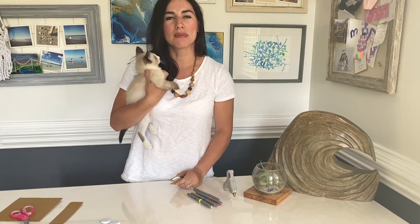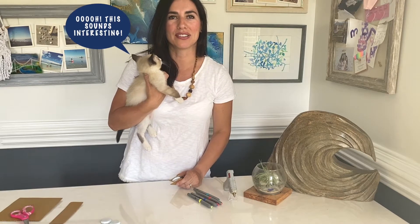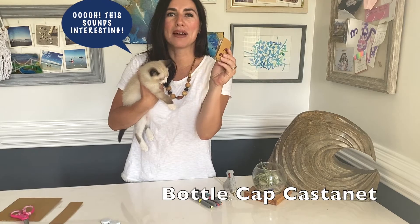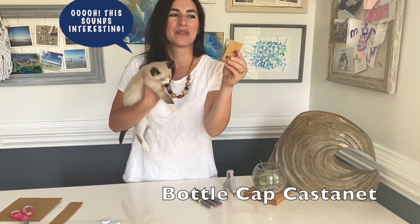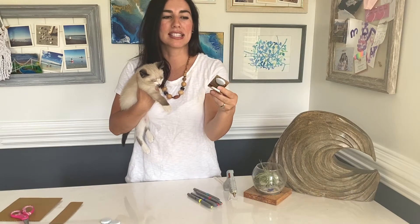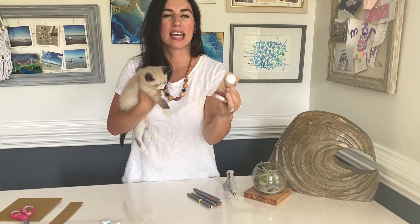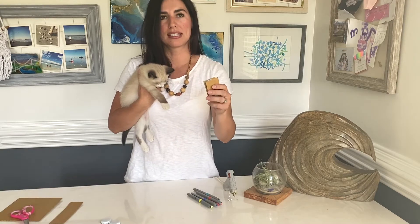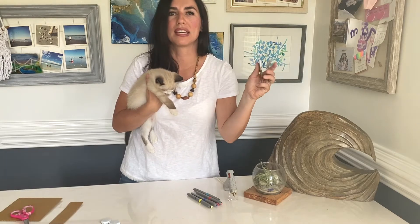Today we are making a fun musical instrument with items you hopefully have around your house. We are going to be making bottle cap castanets. A castanet is an instrument that makes a sound when you click two pieces together. If you press them like this you've got a sound and then you can start following a beat.